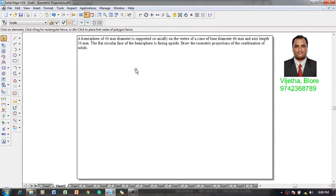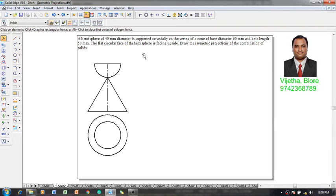The hemisphere of diameter 40 millimeter is coaxially positioned on the vertex of a cone whose diameter is 60 mm and axis length is 50 mm. First, when we construct the orthographic projection, this is how it will look. Once we have the orthographic projection, we will get a clear idea how to complete the problem.